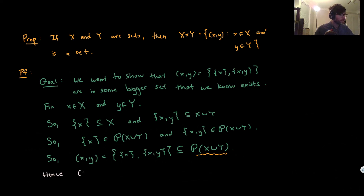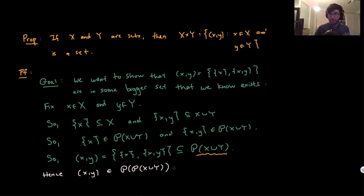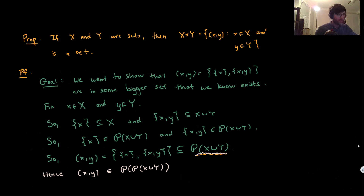Hence, the ordered pair (x, y) is an element of the power set of the power set of X union Y. You're in the power set of something if and only if you're a subset of it. The ordered pair is a subset of the power set of X union Y, so it must be an element of the power set of that. This is our key fact, and now we can finish with the comprehension schema.